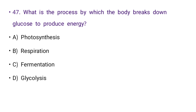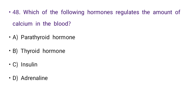Next: What is the process by which the body breaks down glucose to produce energy? Options: photosynthesis, respiration, fermentation, or glycolysis. The right answer is D: glycolysis.